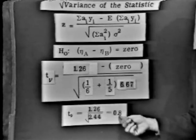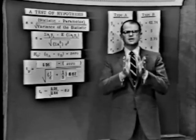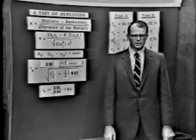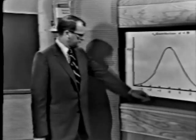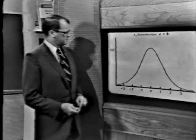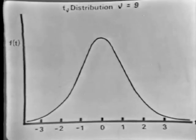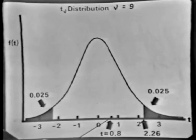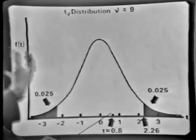Now we're ready for the $64 question: is this value of T an unusual value of T? It's a T with 9 degrees of freedom, so let's look at the T distribution with 9 degrees of freedom. It's a bell-shaped curve, very normal-like in appearance, but a little more squished in the center and slightly higher in the tails. Our observed value of T was 0.8. That's not a terribly unusual value of T — it's a value that happens quite often indeed.